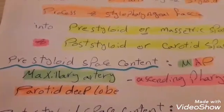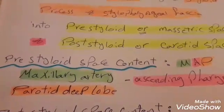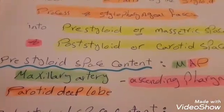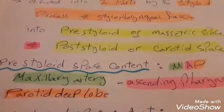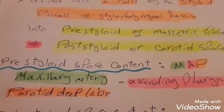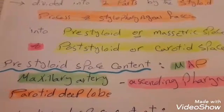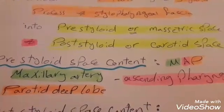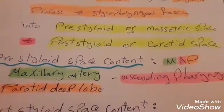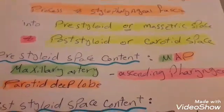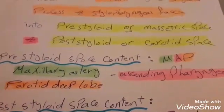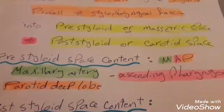The pre-styloid space content — we can mnemonize it by the word MAP: M for maxillary artery, A for the ascending pharyngeal artery, and P for parotid deep lobe.